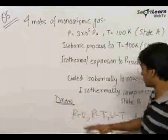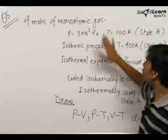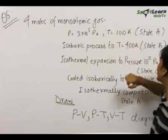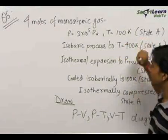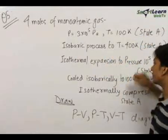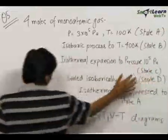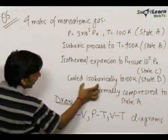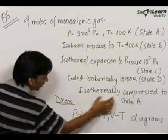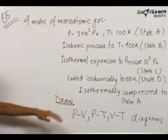The next question involves drawing graphs. We have been given 4 moles of a monoatomic gas with a pressure of 3×10⁵ Pascals and T equal to 100 Kelvin initially — this is called state A. From state A it undergoes an isobaric process to T equal to 400 Kelvin (state B), then isothermal expansion to a pressure of 10⁵ Pascals (state C), then cooled isobarically to 100 Kelvin (state D), and then compressed isothermally back to state A. We need to draw the PV, PT and VT diagrams qualitatively.